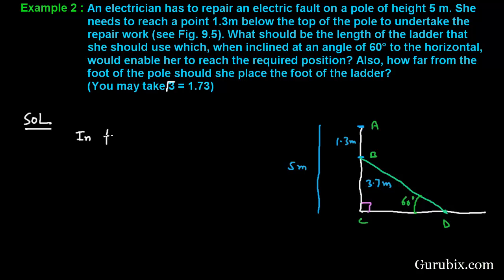In the figure, BC is equals to AC minus AB. This means 5 minus 1.3 meters. This means 3.7 meters. BC is 3.7 meters.